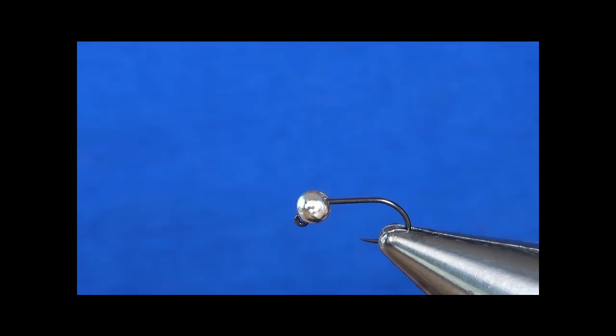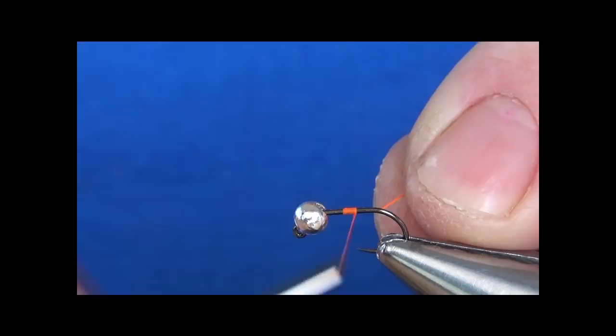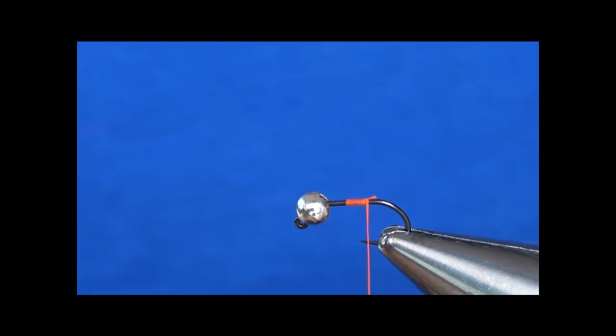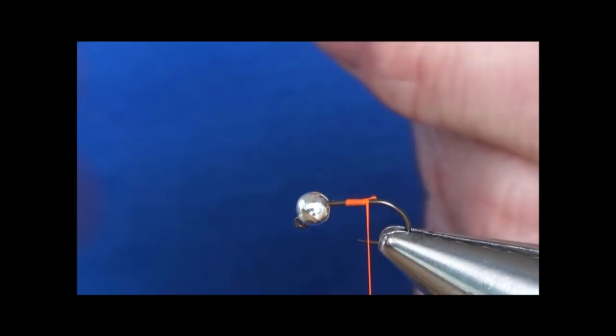Now for my tail, I'm going to use cock pheasant and I'm going to tie that in with Tommy Fly UV reflective tying thread. A couple strands of nice dark cock pheasant, hold it on top, just pinch and pull in.